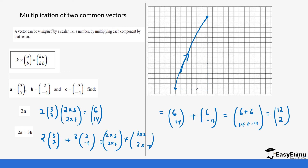We can start our vector here. So 12 steps to the right and then 2 steps upward in the positive direction on the y-axis. The final vector endpoint is there, and you join the two points with a straight line.